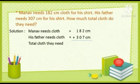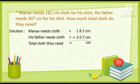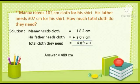Total cloth they need equals — we will write the unit cm, then start adding the numbers from the right side. 2 plus 7 is equal to 9. 8 plus 0 is equal to 8. And 1 plus 3 is equal to 4. So our answer is equal to 489 cm.